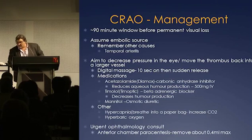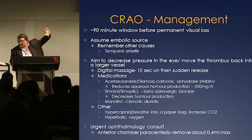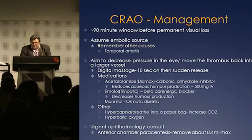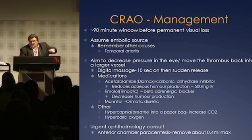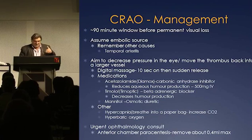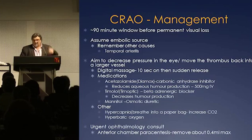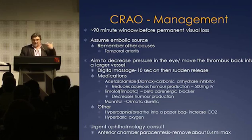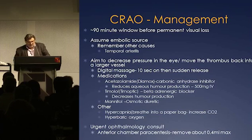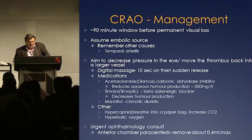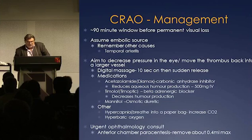The management — there's not a lot you can do for these patients really. The idea for us initially is we've got to move that thrombus into a branch. One thing is digital pressure: put gentle pressure on the eye for five to ten seconds and then release it — the idea is to push it into a branch artery. We think about acetazolamide to decrease aqueous humour production, a beta blocker is always a good idea, and we'll consider mannitol. The ophthalmology team may want to do anterior chamber paracentesis to decrease pressure.